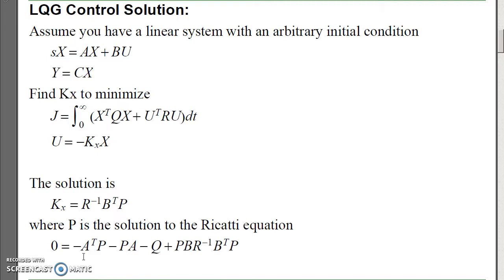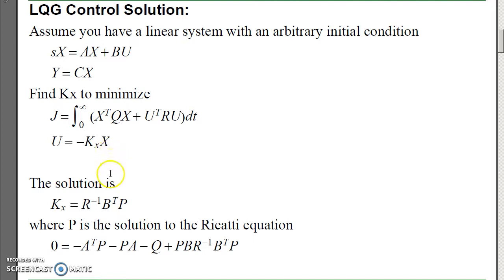The solution is: given a dynamic system x-dot equals Ax plus Bu, y equals Cx, LQG minimizes the cost function x-transpose Q x plus u-transpose R u, where Q and R are constant positive definite matrices. The resulting optimal feedback gain is minus kx times x, where kx equals R-inverse B-transpose P, and P is the solution to the algebraic Riccati equation. We just know that kx is a stabilizing feedback gain that minimizes some cost function.